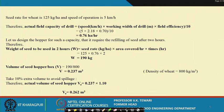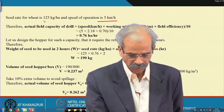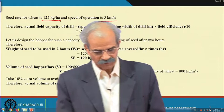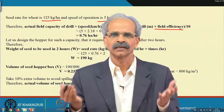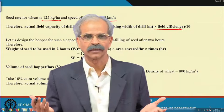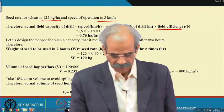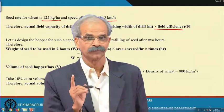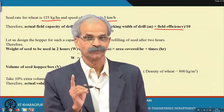Now let us talk about the seed rate. Taking wheat as the crop, with a seeding speed of 5 km/h, a working width of 2.6 m, and a field efficiency of 0.7 (70 percent), the actual field capacity of the drill is calculated as speed × working width × field efficiency. This gives approximately 0.76 hectares per hour, meaning in one hour this particular drill will cover 0.76 hectares.